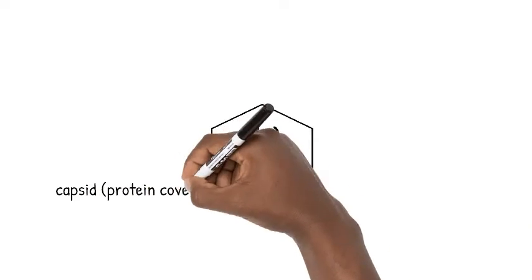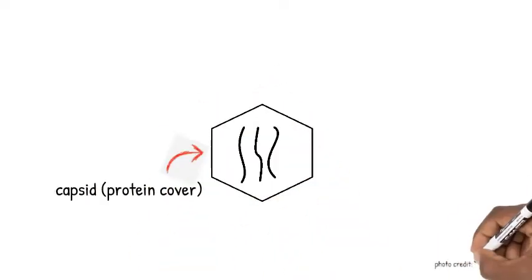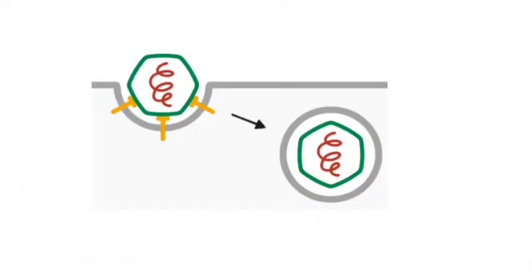Naked viruses have a simple capsid covering. Enveloped viruses peel off a little bit of the cell membrane of the cells they infect and wrap themselves in it for protection.